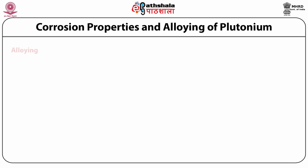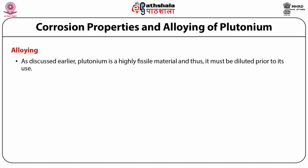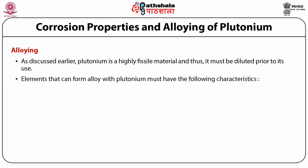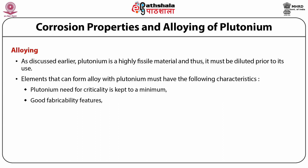Now we will discuss about the alloying of plutonium. Plutonium is a highly fissile material and thus it must be diluted prior to its use. Additionally, its general physical, chemical and mechanical properties do not allow it to be used in unalloyed form as it has a stronger affinity to produce intermetallic compounds than uranium. However, both plutonium and uranium have similar behavior of alloy formation. Elements that can form alloy with plutonium must have the following characteristics: first, plutonium needed for criticality is kept to a minimum; second, good fabricability features; third, higher thermal and irradiation stability.